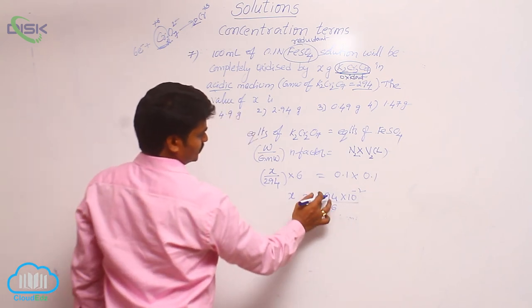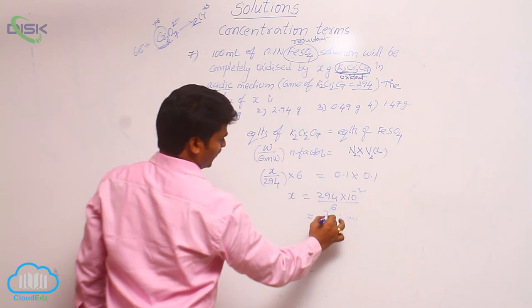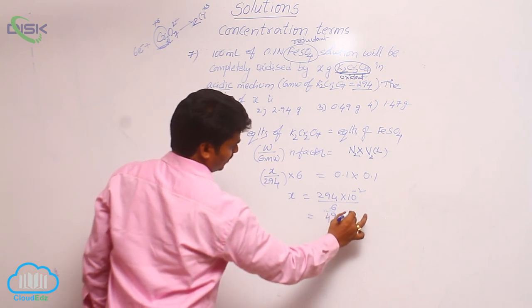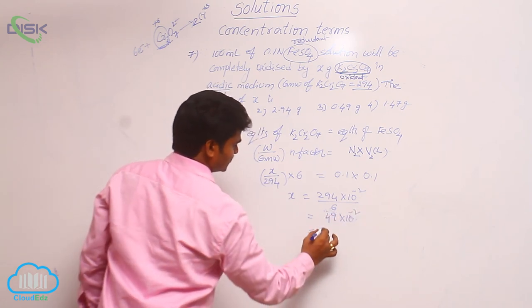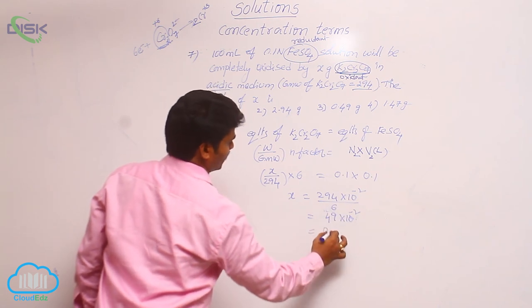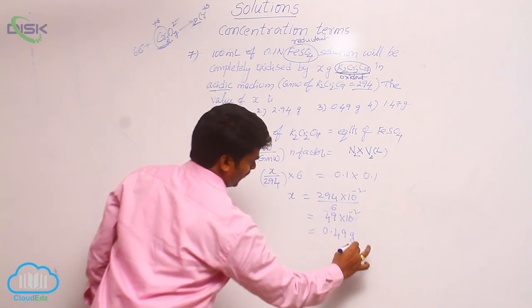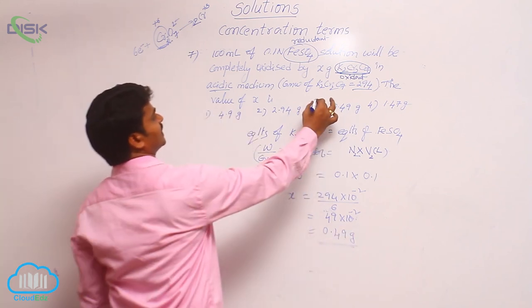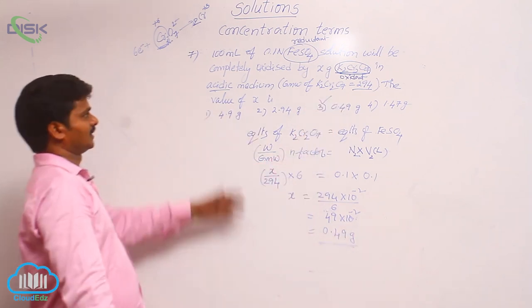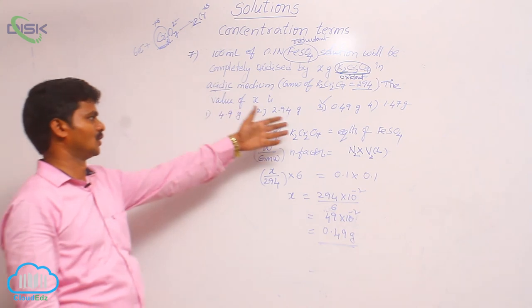294 divided by 6 is 49. 49 times 10^-2 means 0.49 grams. Where is it? It is in the third option. So for this given question, the answer is 0.49 grams.